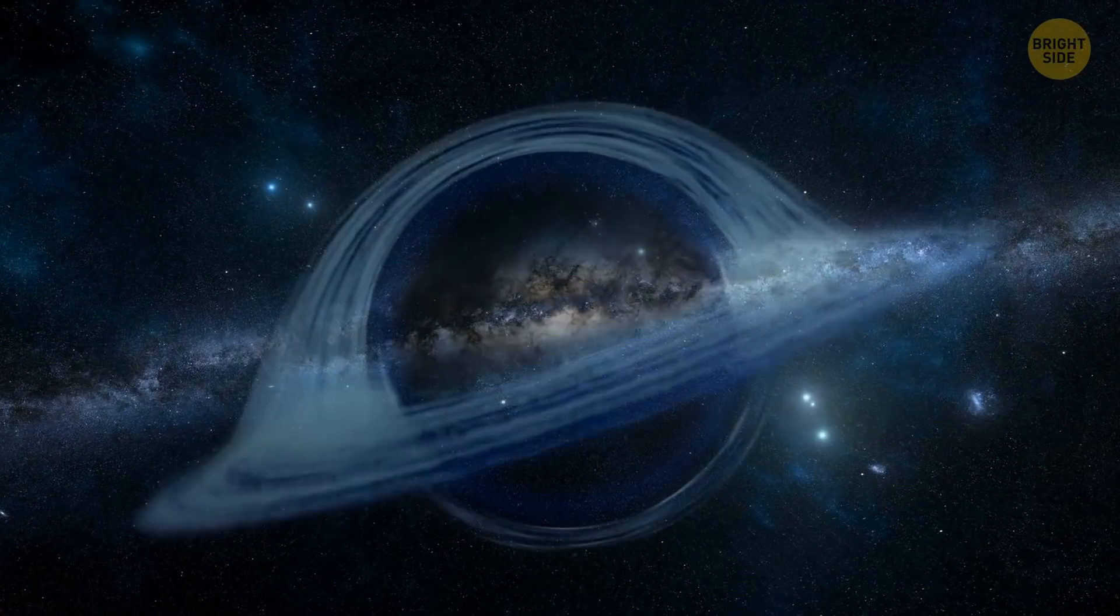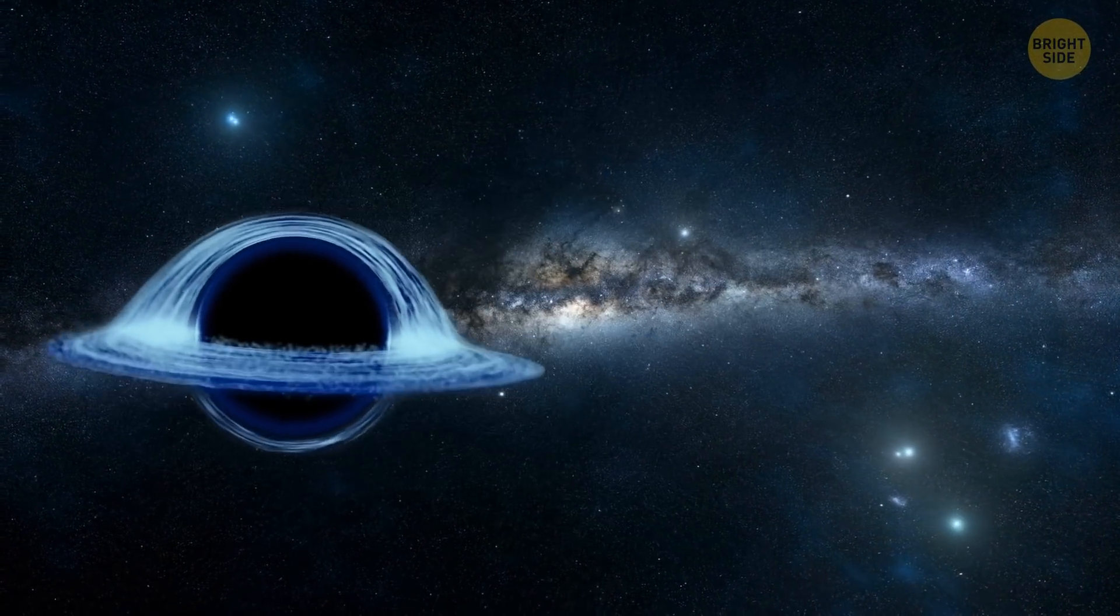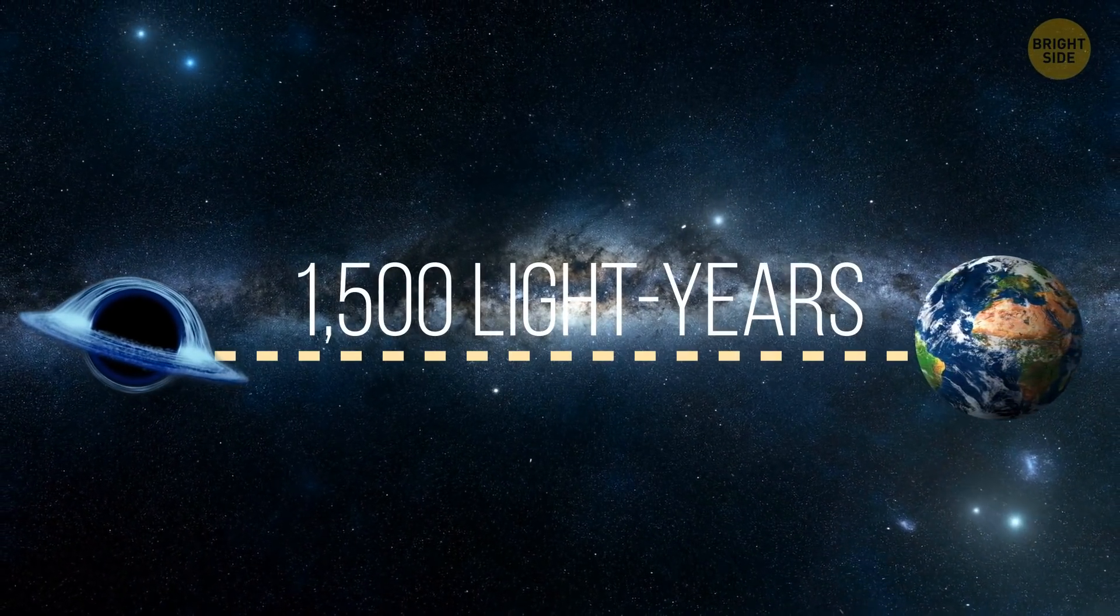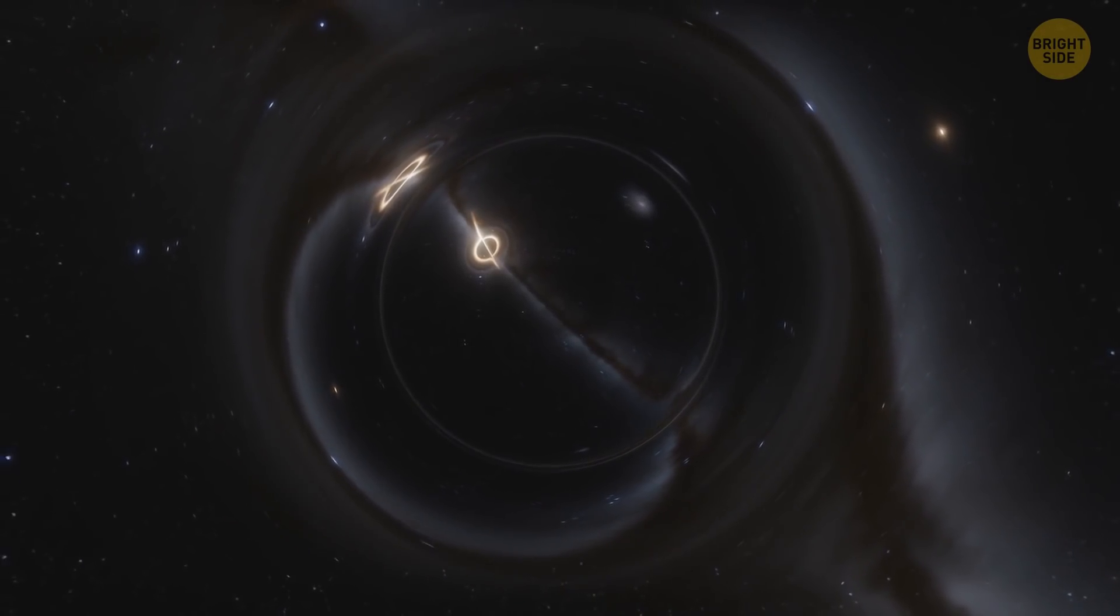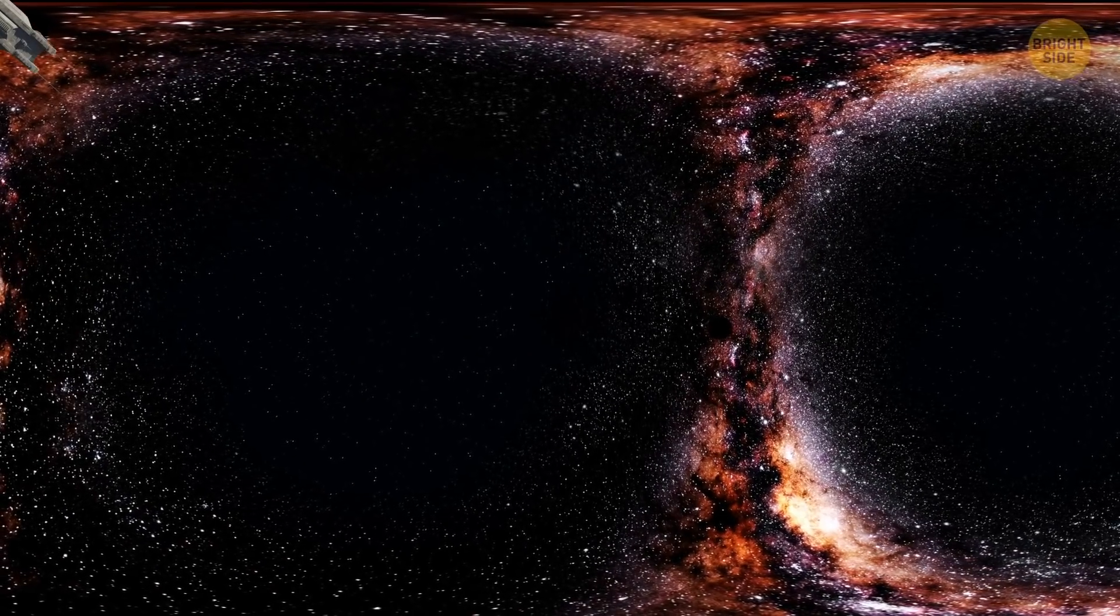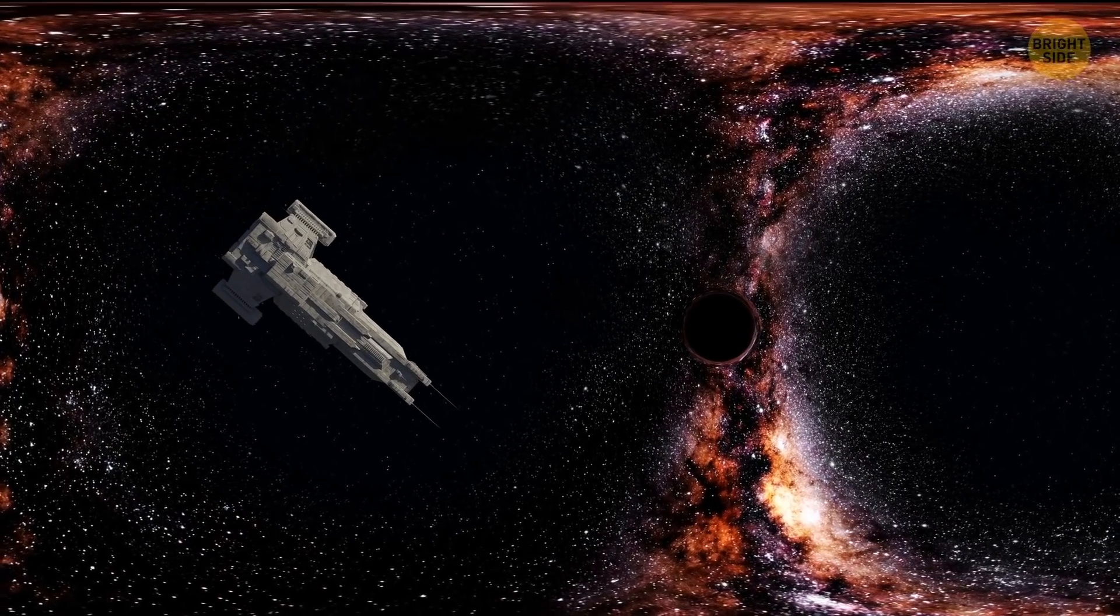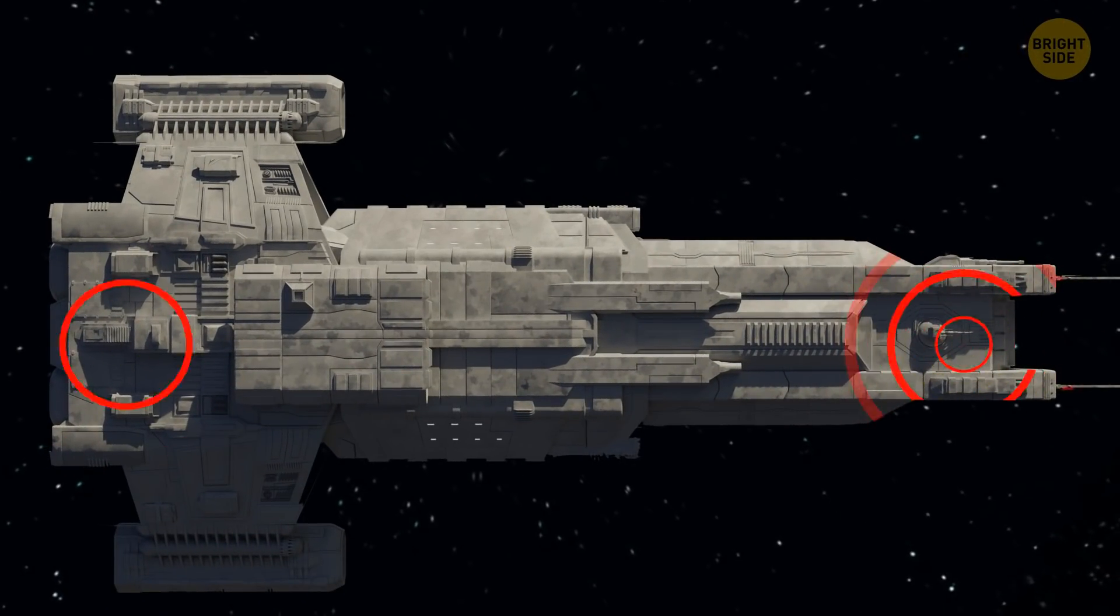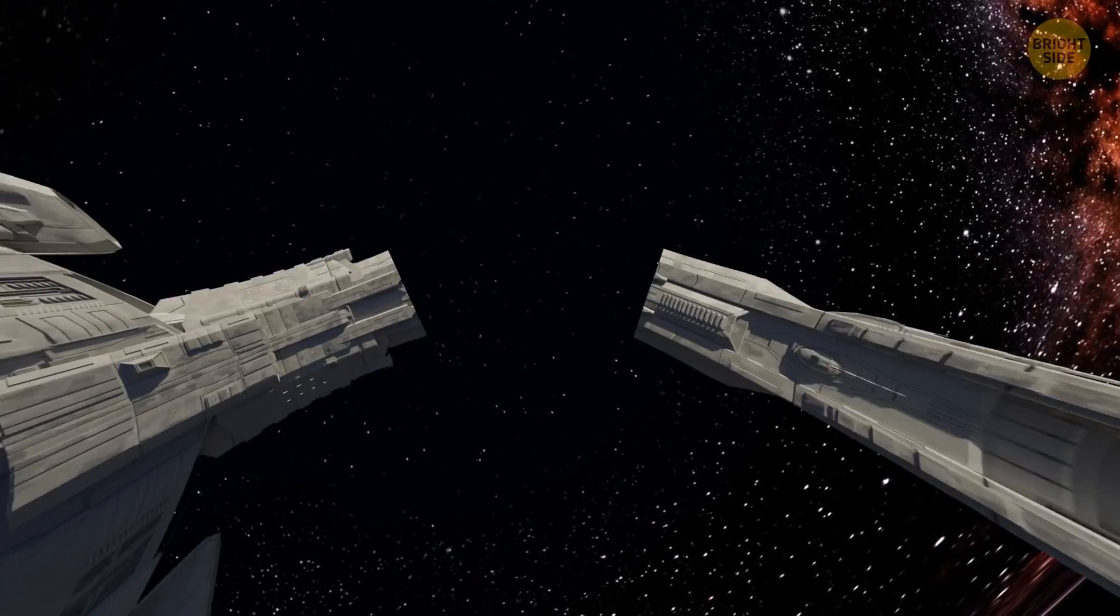Some scientists believe that wormholes can be inside black holes. But there are two problems here. The nearest black hole is 1,500 light-years away, so a trip there would take eons. The second problem is the hole's gravity. Black holes have the strongest gravitational pull of any object in the universe. Their gravity can crush any spacecraft. That's because the gravitational force increases with every inch you move closer to the black hole's center, and the force affecting the nose of the spaceship will be much stronger than the force that affects the tail. The spaceship will stretch out like spaghetti and get torn apart.